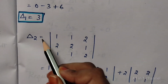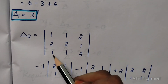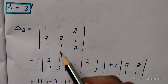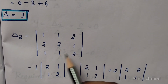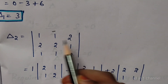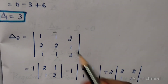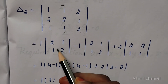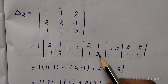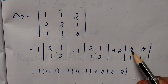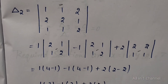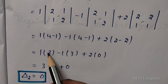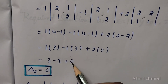We need to find delta 2 value. Delta 2 equals the matrix with second column replaced by constants 1, 2, 1: matrix is 1, 1, 2; 2, 2, 1; 1, 1, 2. Delete first row and first column: 2, 1, 1, 2. Minus 1: delete first row and second column: 2, 1, 1, 2. Plus 2: delete first row and third column: 2, 2, 1, 1. Computing: 1 into 2 into 2 equals 4; 1 into minus 1 equals minus 1. Minus 1: 2 into 2 equals 4; 1 into minus 1 equals minus 1. Plus 2: 2 into 1 equals 2; 1 into minus 2 equals minus 2. 1 into 3 equals 3; minus 1 into 3 equals minus 3; plus 2 into 0 equals 0. 3 minus 3 equals 0.